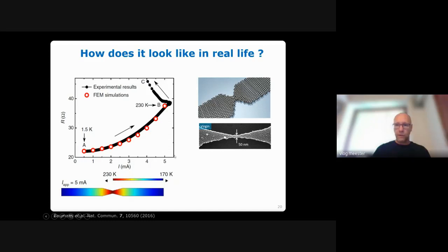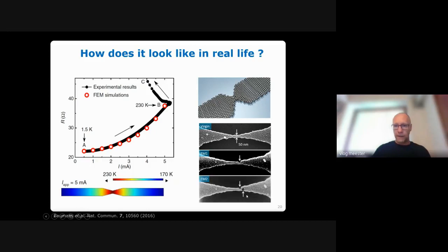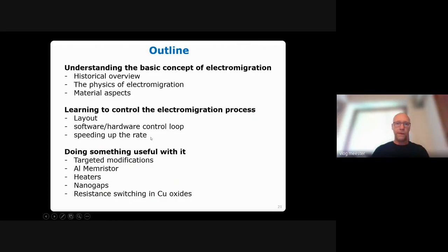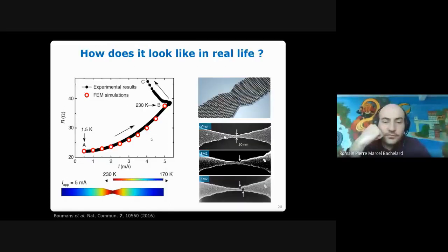We make a SEM image of the constriction before electromigration, then electromigrate, see that material is removed and deposited elsewhere, electromigrate again, and with enough control can go all the way down to a single atom in the constriction.